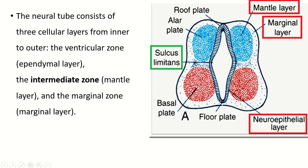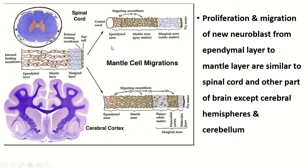In between the two alar plates is the roof plate, and in between the two basal plates is the floor plate. The central canal is the cavity of the neural tube, lined by stratified columnar epithelium. By the process of mitosis, neuroblasts are formed, migrate, and form the mantle layer; their processes form the marginal zone. This pattern occurs in the spinal cord and most parts of the brain stem.